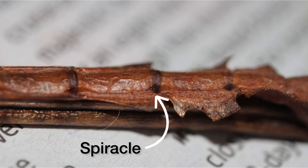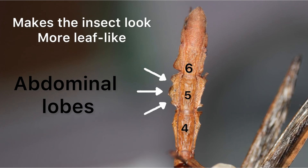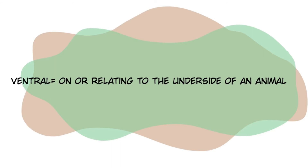Abdomen segments one to seven consist of a spiracle on both sides, making up a total of 14. The spiracles are the breathing apparatus of the insect and can be quite difficult to see on male abdomens because their abdomens are smaller in mass compared to females. Abdomen segments four, five, and six contain two abdominal lobes each, making a total of six lobes. These lobes act as camouflage and help the insect blend into the leaves of trees. This finishes up the lateral external view of the male Extatosoma tiaratum.